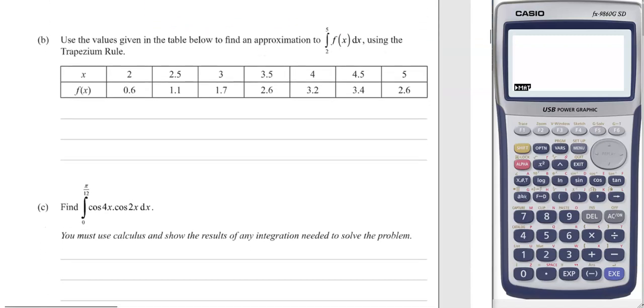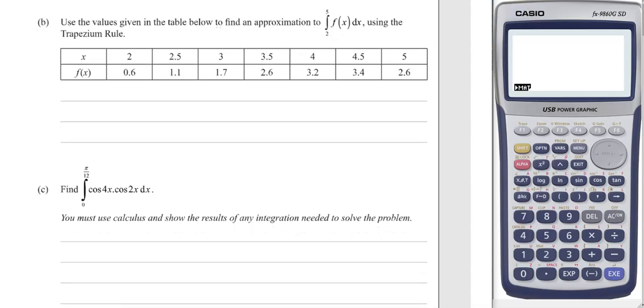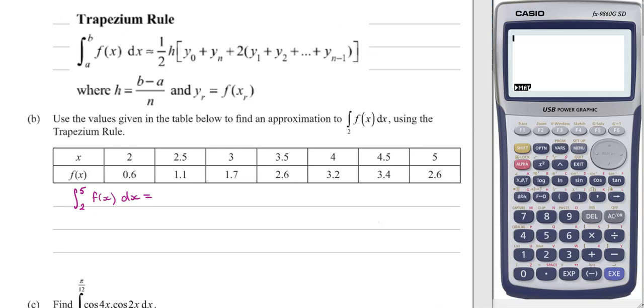Part 2 is use the values in this table to approximate this integration using the trapezium rule. I've got the trapezium rule up on the screen above the question. That's on your formula sheet. We need h, which is b minus a over n. In this case, it would be 5 minus 2 over n. Now n is how many trapeziums you have.